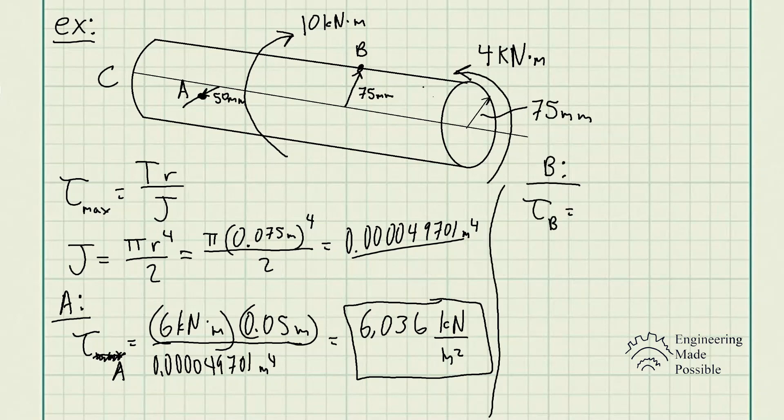So what is the shear stress at point B? So we know the radius here is 75 millimeters, so essentially right at the surface. So we know this is going to be the maximum stress that this rod is going to experience due to that reason. Now, what exactly is the torque?